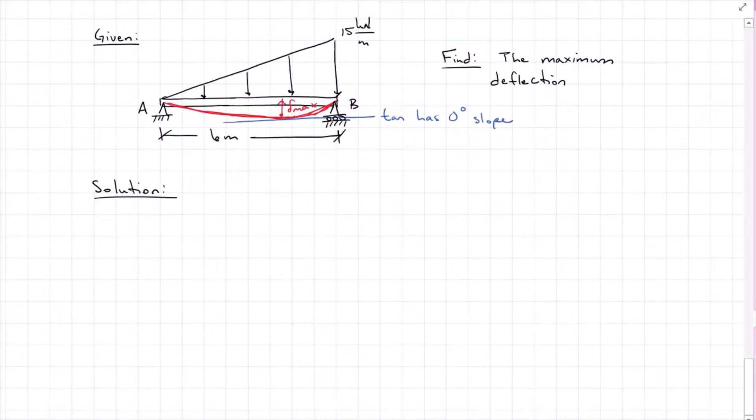So if I find where the slope is equal to zero, I will have my location for my maximum deflection, and then I can solve for my maximum deflection. The very first thing that I need is the equation for the system's moment.